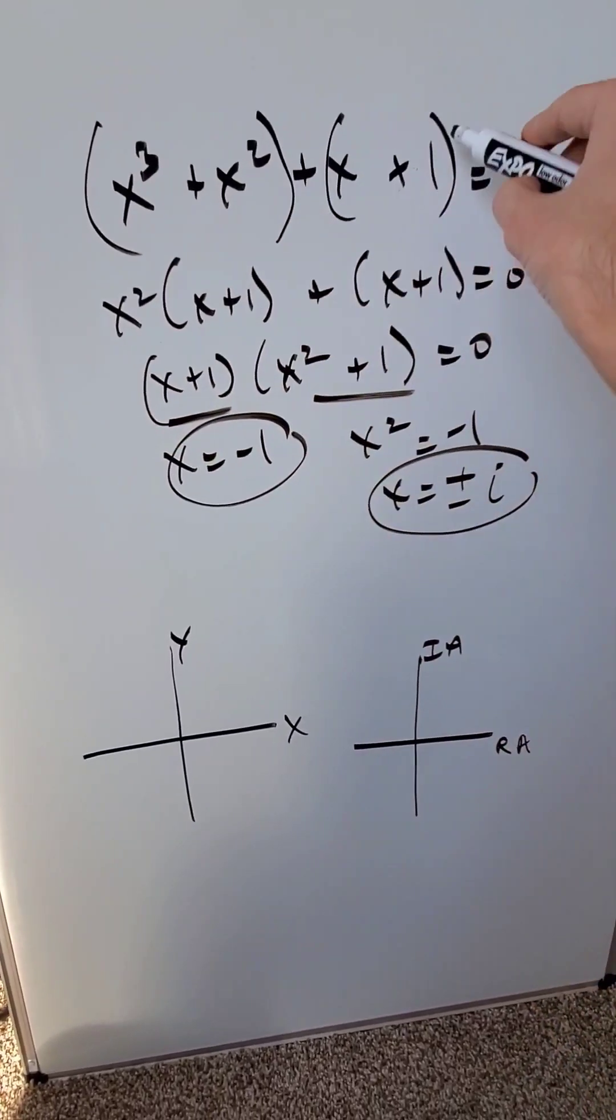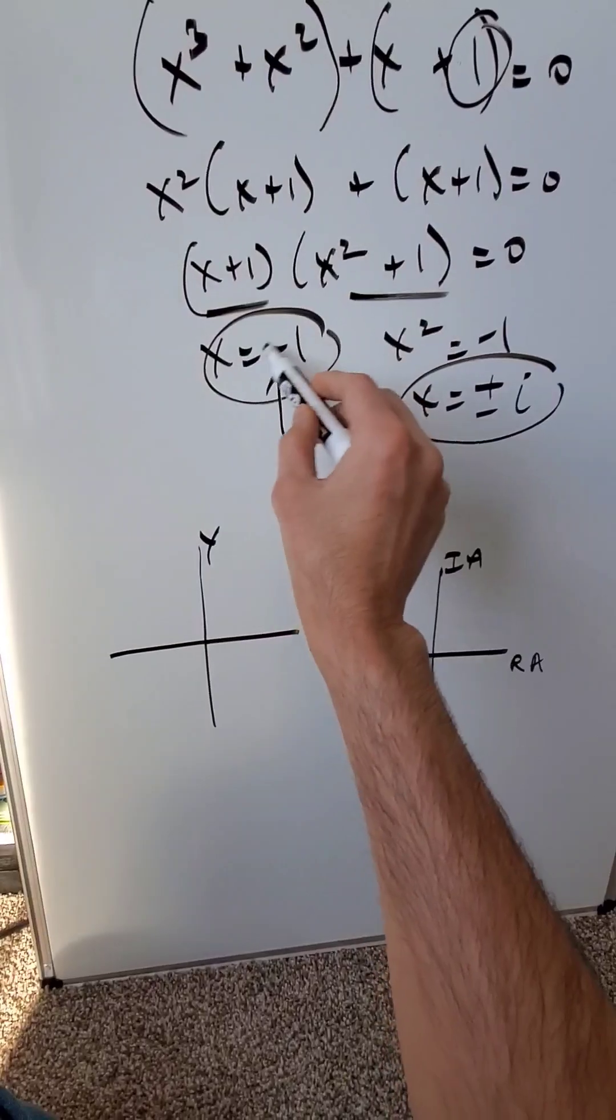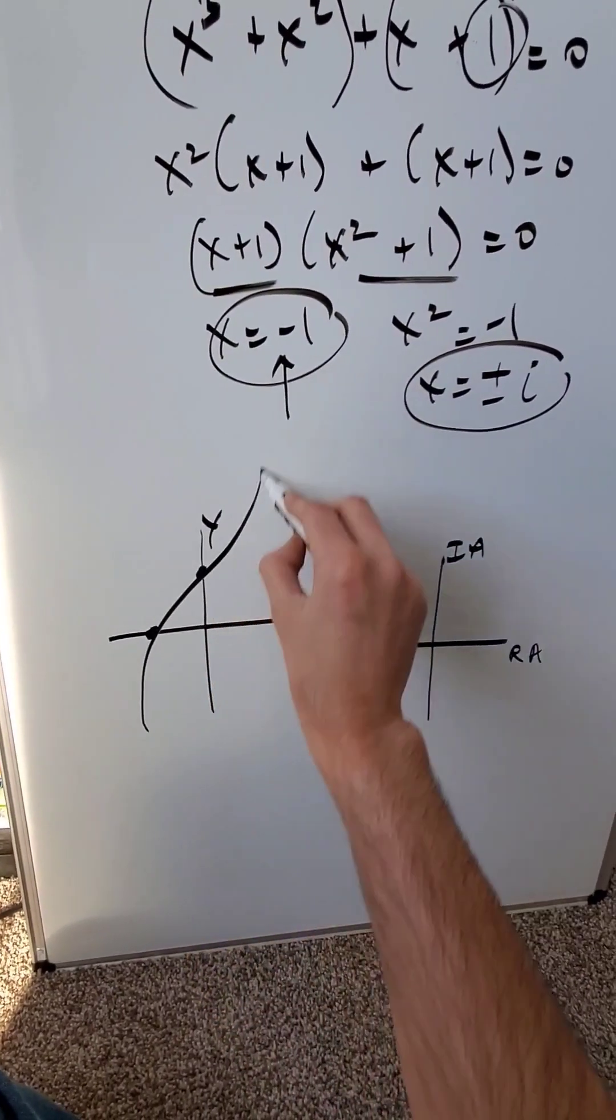If you look right here at this original graph, you have a y-intercept zero comma one. You have an x-intercept. On an x and y axis, you can only demonstrate this solution minus one comma zero with a y-intercept. Your graph would look something like this.